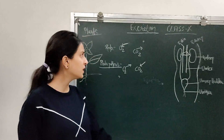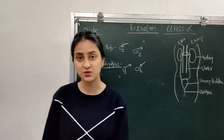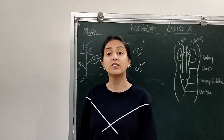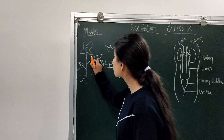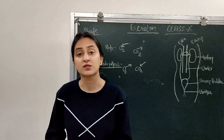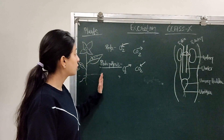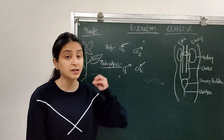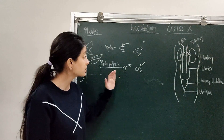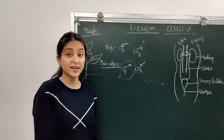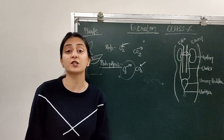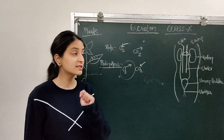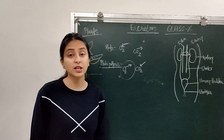Now let's talk about excretion in plants. Plants have different parts that carry out excretion. First, let's talk about leaves. In leaves, small pores called stomata are present — we've learned that stomata also helps in respiration. In the case of plants, stomata also helps in excretion. During the day, photosynthesis occurs and oxygen is released, meaning oxygen is a waste product. So during daytime, oxygen is the waste product in plants and it is released through stomata.